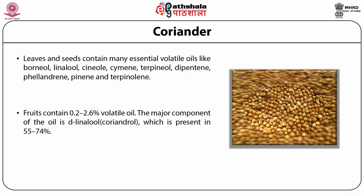Leaves contain less volatile oil than fruits, about 5% fats, about 22% proteins, sugars, coumarins, and flavonoid glycosides, similar to those in fruits, vitamin C and others. The volatile oil contains mainly decyl and nonyl aldehydes and linalool, among others. Functions include: the plant yields two parts used for flavoring purposes, the fresh green herb and the spice. However, the odor and flavor of these two products are different.